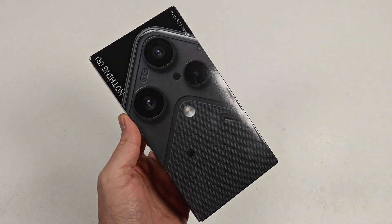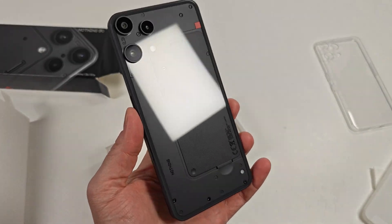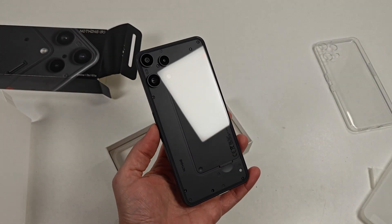The Nothing Phone 3A Lite is Nothing's cheapest phone yet, debuting in Europe and the UK this week for €249 or £249.